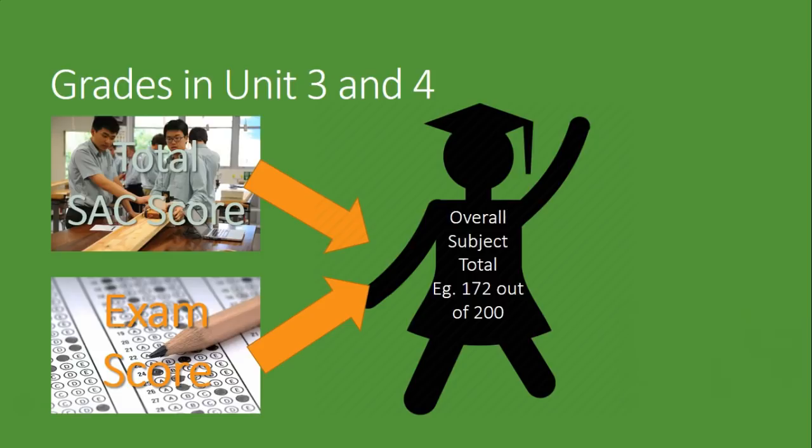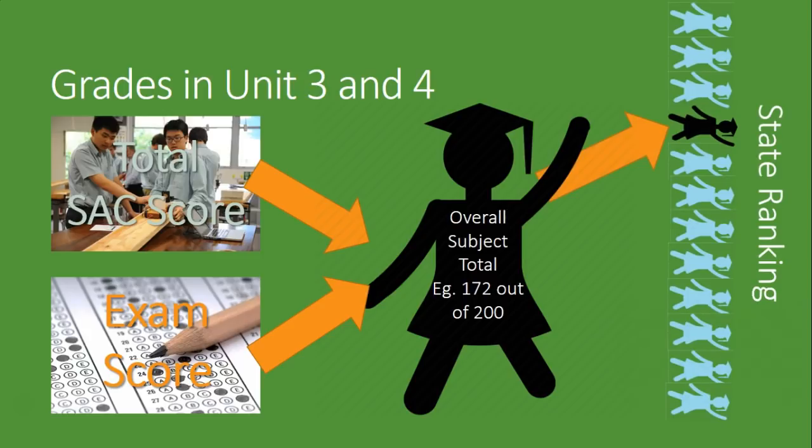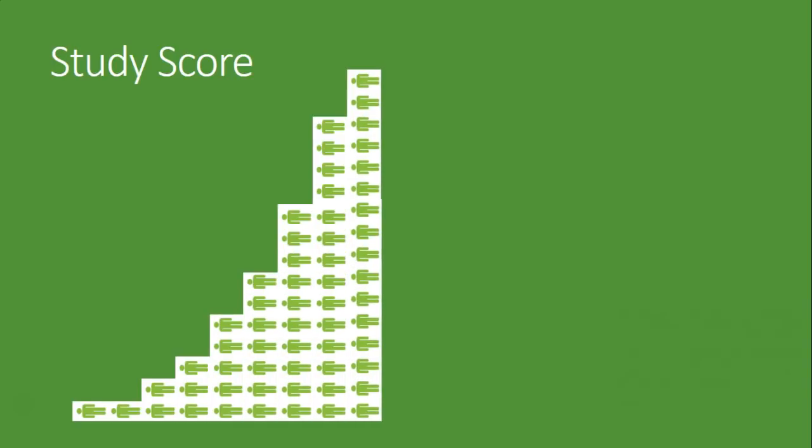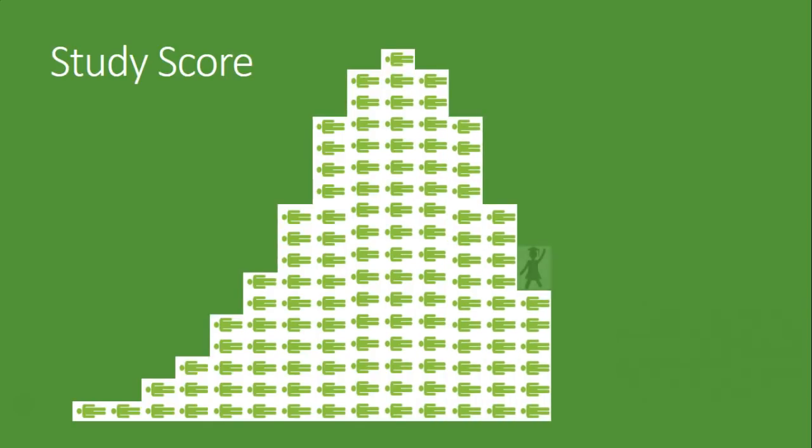That score is not your study score. What they then do is compare your score to everybody else who's done that subject, and you get a ranking within the state. You are the 10,314th highest ranked student or you are the 458th, or whatever it might be. They arrange each person from lowest score all the way up to highest score in this very special shape called a bell curve. A bell curve says most people are in the middle.